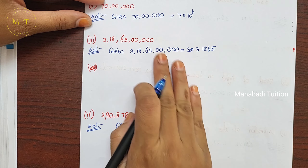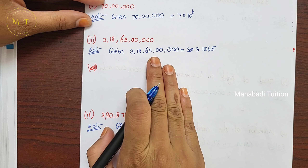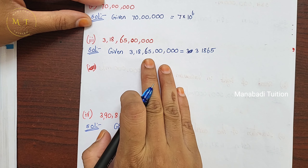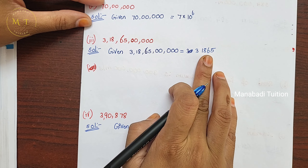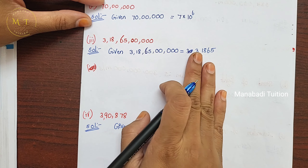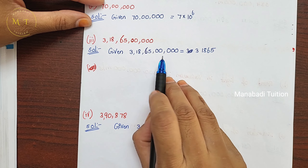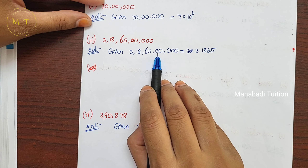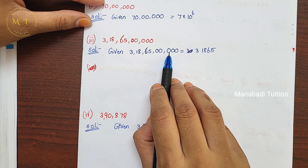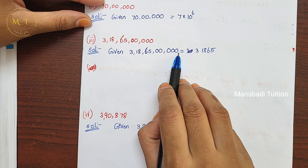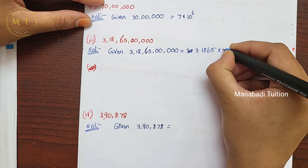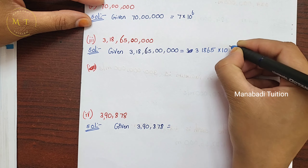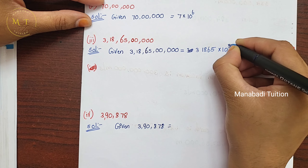Except zeros — before you get there, there are numbers. These numbers are zeros. Here there are 5 zeros. So there are 10 power 5.